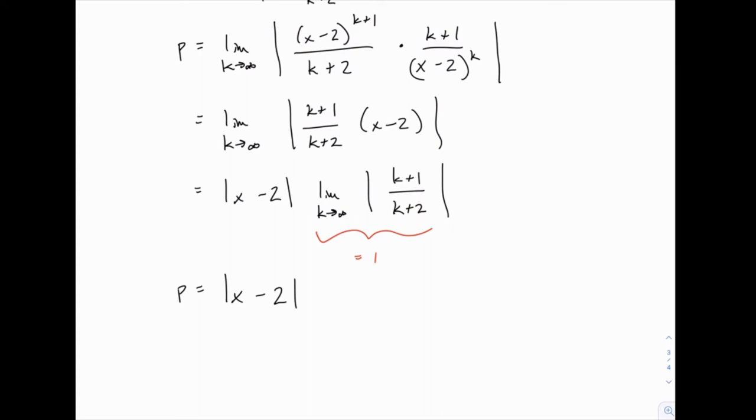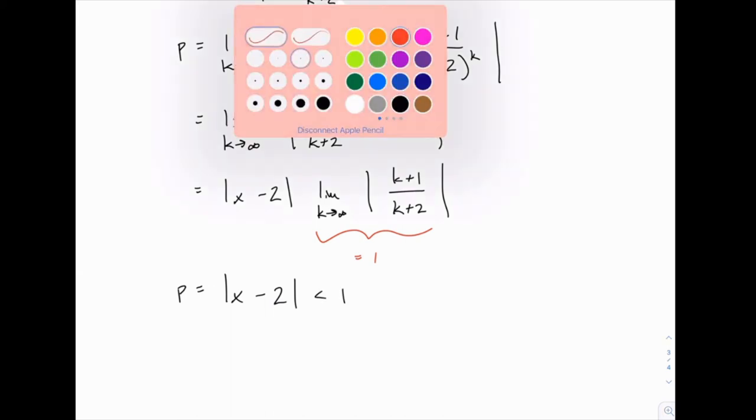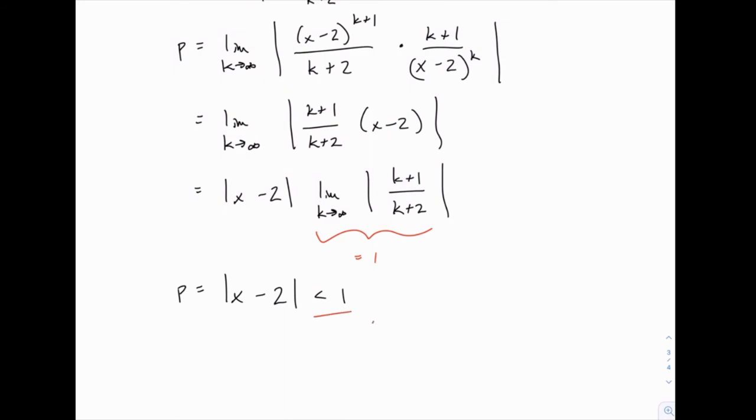Then you need to remember the starting point here, that when we're doing the ratio test, the goal is to find the values of p that are less than 1. So according to the ratio test, this is what needs to happen in order to converge. So this series will converge according to the ratio test whenever the absolute value of (x minus 2) is less than 1.